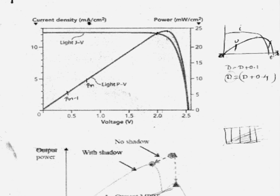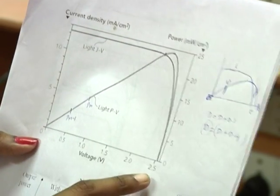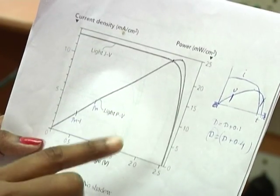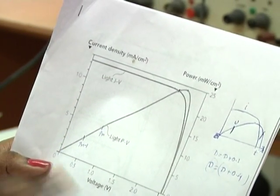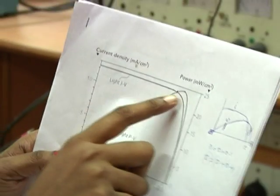This is the current versus voltage diagram of the PV and this is the power versus voltage diagram of the PV. As we can see, the power versus voltage diagram is non-linear in nature. During short circuit condition and open circuit condition, power will be zero. There exists only one maximum power point for a particular environmental condition, and here is that maximum power point of the PV.